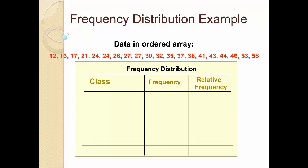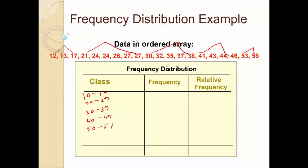First, order the data. Instead of just grouping by frequency, we'll define class limits. Looking at the data, it's obvious how to group them: all values in the 10s, all values in the 20s, all values in the 30s, all values in the 40s, and all values in the 50s. So the classes are 10–19, 20–29, 30–39, 40–49, and 50–59.